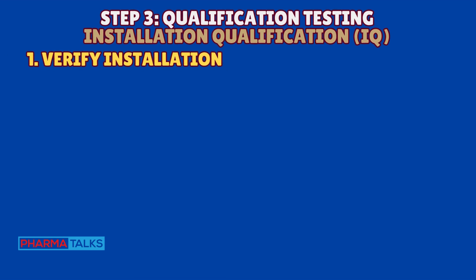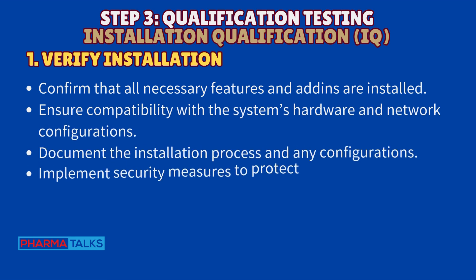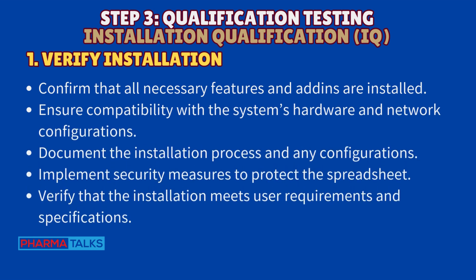Step 3: Qualification testing. Installation Qualification (IQ) — verify installation. Confirm that all necessary features and add-ins are installed. Ensure compatibility with the system's hardware and network configurations. Document the installation process and any configurations. Implement security measures to protect the spreadsheet. Verify that the installation meets user requirements and specifications.